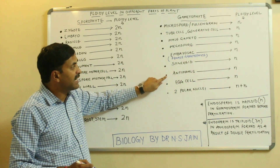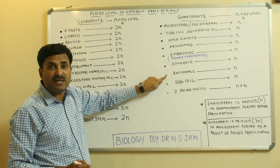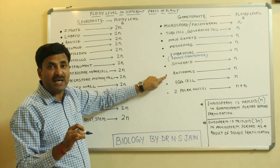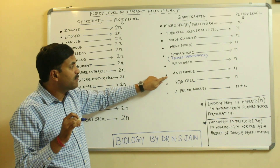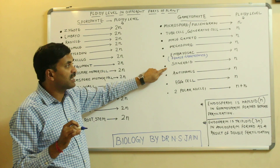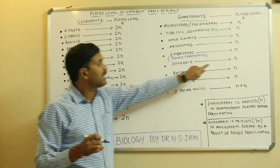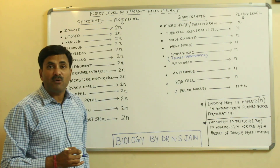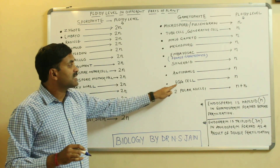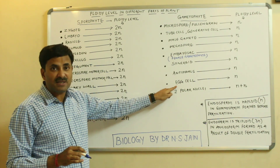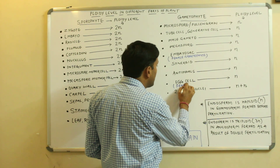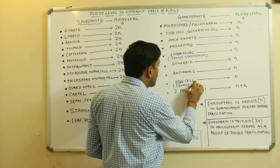Now, synergids and antipodals. Inside the ovule, the embryo sac is present. In the embryo sac, antipodal cells are present at one pole and synergids are present at the other pole, and both synergids and antipodals are haploid. The egg cell, which is present in the embryo sac and acts as the female gamete, will also have a ploidy level of haploid, because gametes are always haploid.